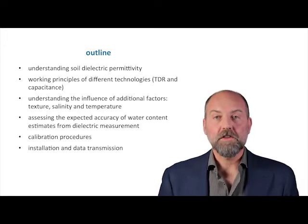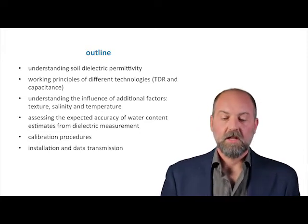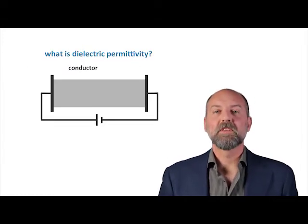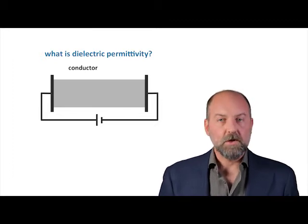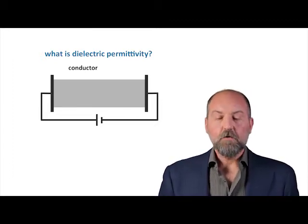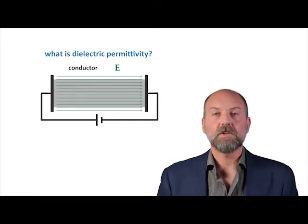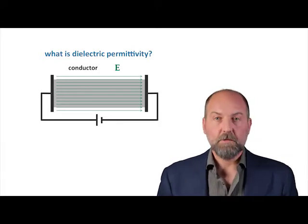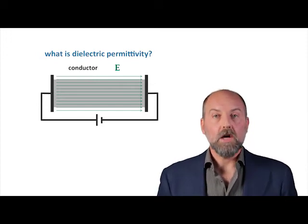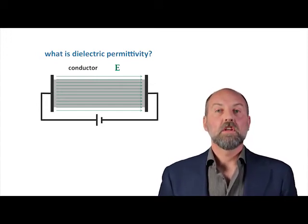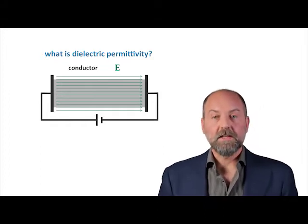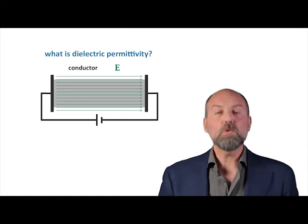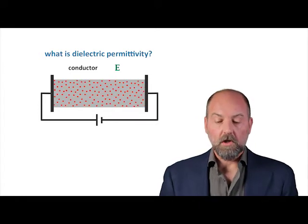But before everything, we need to understand what dielectric permittivity is. To develop a good understanding, I like to compare a dielectric material with something we're all familiar with: a conductor. If we apply an electric field in a conductor, there are particles that are free to move — for example, in metal, many of the electrons are free. Under the influence of an electric field, these electrons, which have a charge, will start moving, and this is what we call electric current.